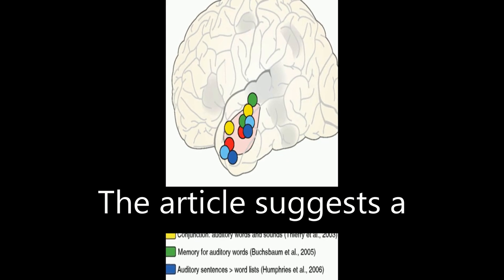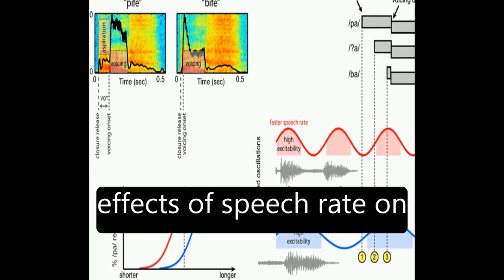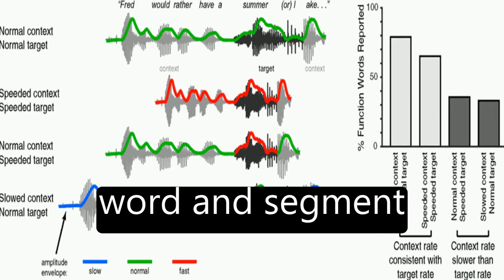The article suggests a framework through which neural entrainment to speech rhythm can explain effects of speech rate on word and segment perception.